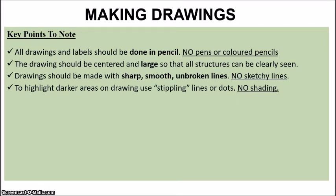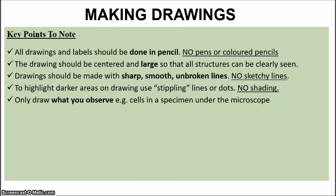Fourthly, you need to be able to highlight any darker areas that you're seeing using stippling lines or dots. There should be no shading at all. Then you also need to only draw what you are observing, what you're seeing under the microscope, for instance. Or if you have a specimen before you, you need to just draw what you see.